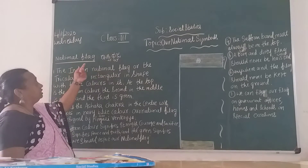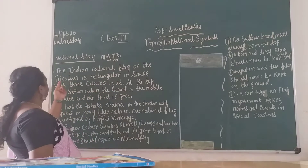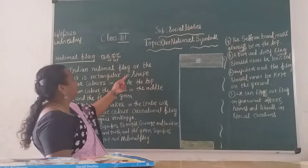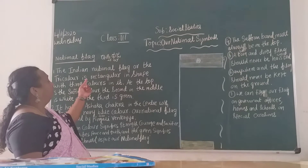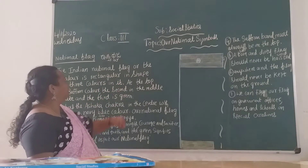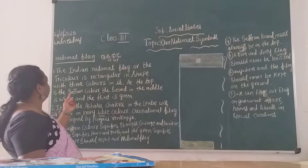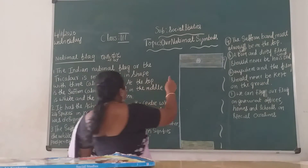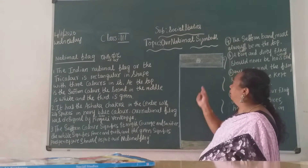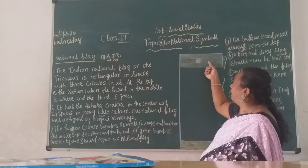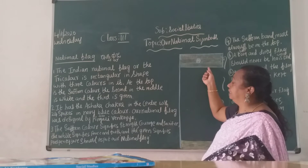In Kannada, what do you call it children? The Indian national flag is rectangular in shape with three colors. Which colors? At the top is the saffron color, then white and green. Look at this picture children — our national flag has three colors: saffron, white and green.